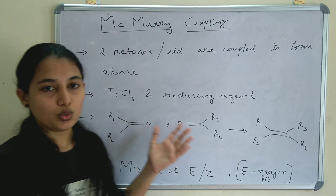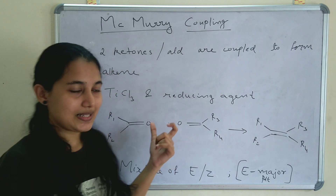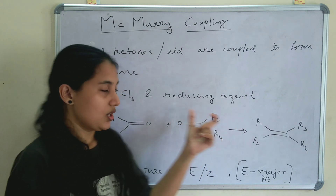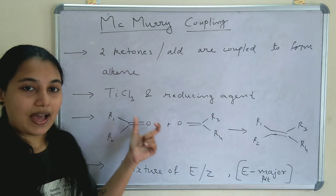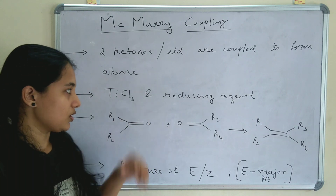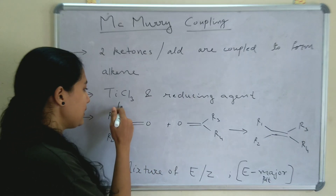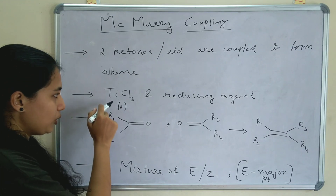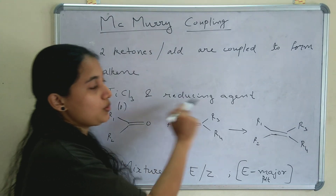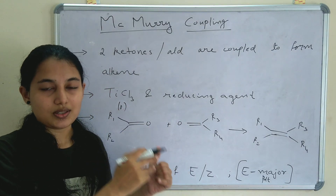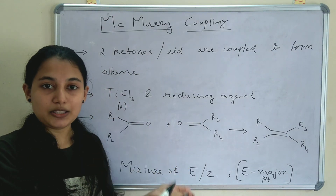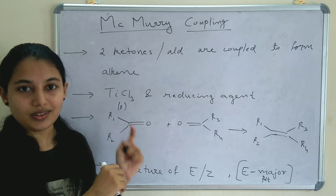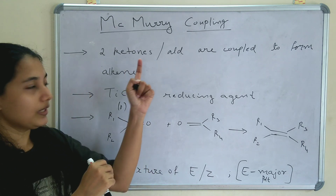The reagents used in McMurry coupling are titanium chloride and a reducing agent. Low-valent titanium metal is used, where the oxidation state of titanium is zero. The reducing agent can be lithium aluminium hydride, zinc-copper couple, etc., and these are used in McMurry coupling.